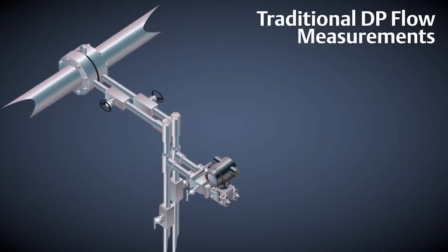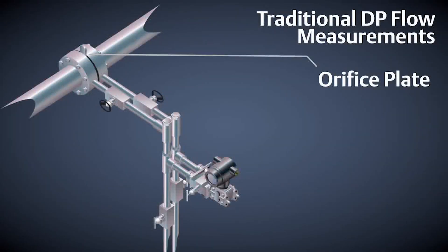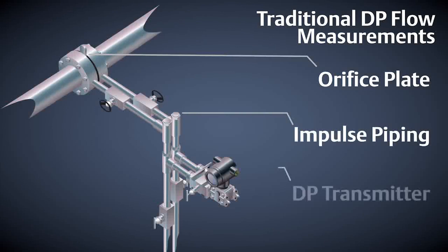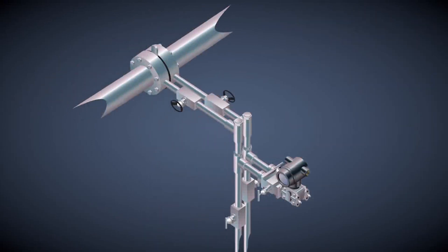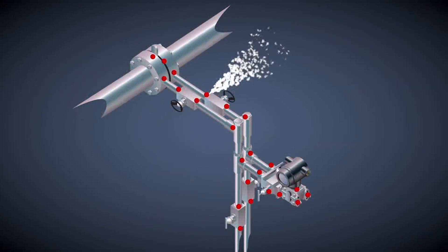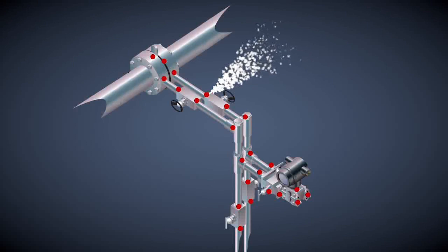Traditionally, transmitters were connected to the process with external impulse piping. Impulse piping is a major expense and gives opportunities for multiple leaks, and creates unnecessary safety hazards by adding extra valves and manifolds to the process connection.